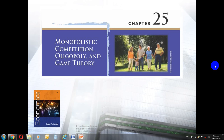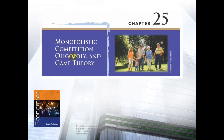Hello everyone, this is part one for chapter 25 which is on monopolistic competition and oligopoly. We're done with chapters 22, 23, and 24. Chapter 22 was on production and costs, chapter 23 was on perfect competition, and chapter 24 was on monopoly. Now we will talk about monopolistic competition and oligopoly — the other two market structures.